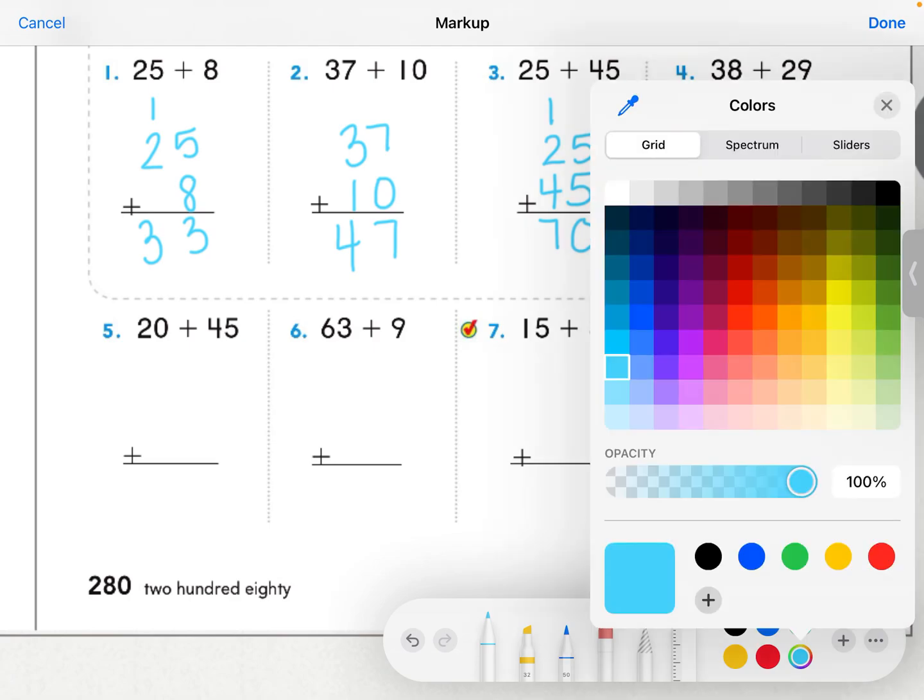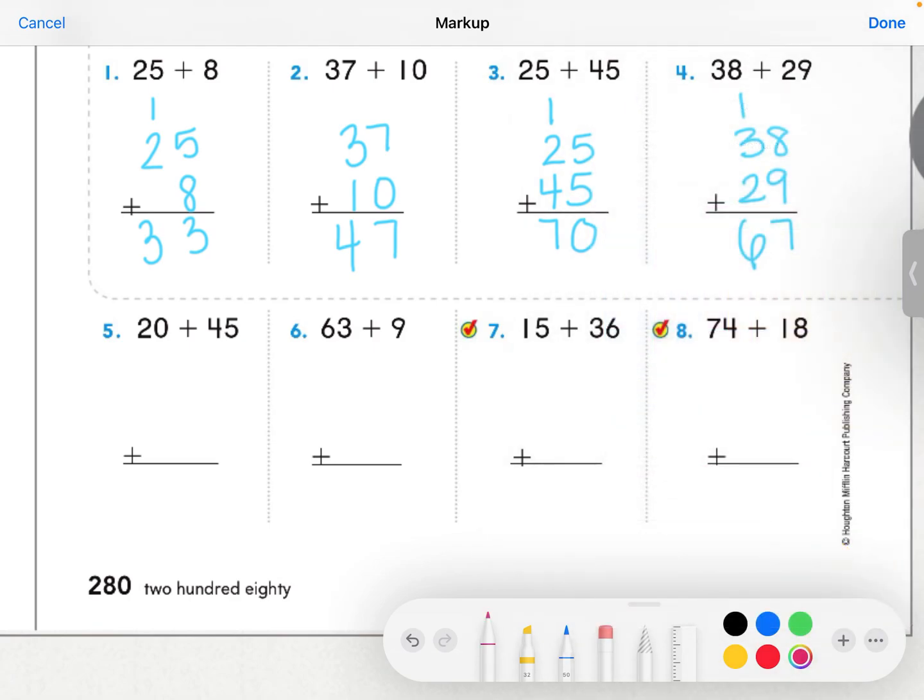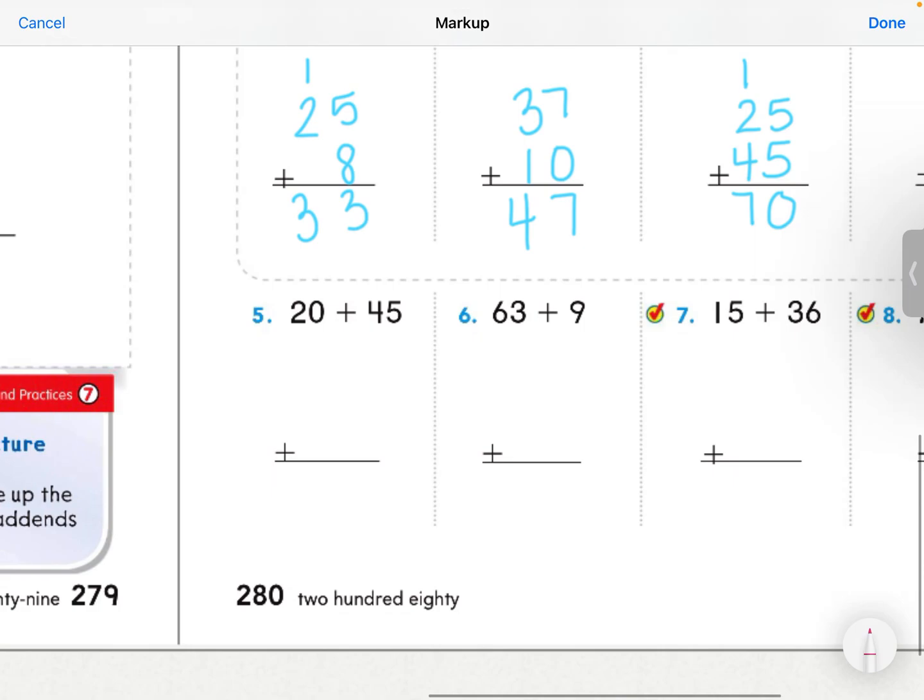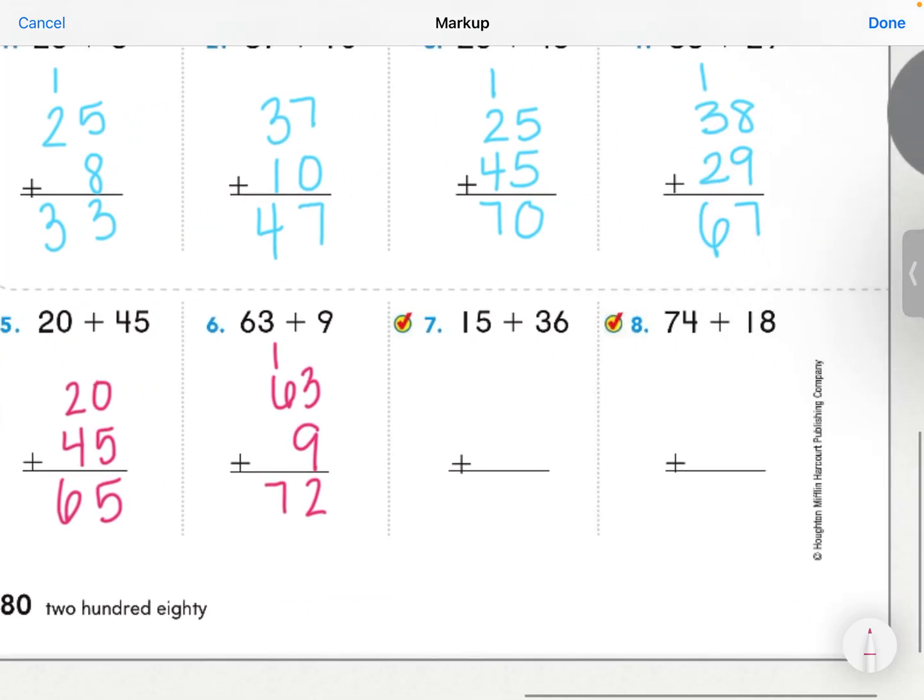Let's go down to number 5. 20 plus 45. I'm going to line them up. Start with my ones. 0 plus 5, 5. 2 tens and 4 tens, or 2 plus 4 is 6. Number 6, I have 63 plus 9. 3 plus 9 is 12. I have enough to create another 10, so I have to record that on the other side. 1 plus 6, or 10 plus 60 is 70.